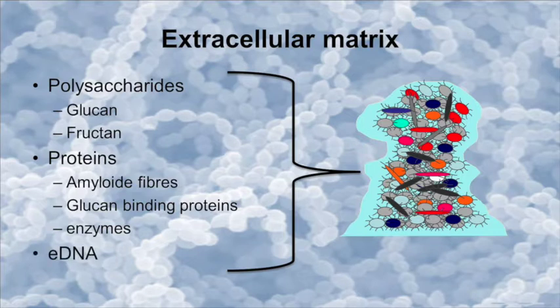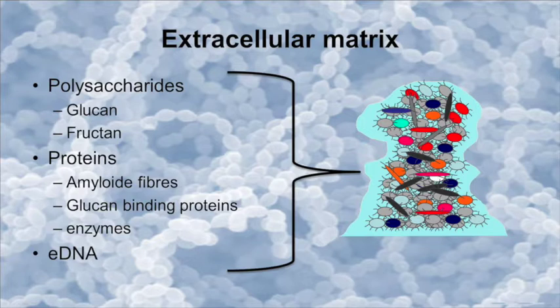DNA, the hereditary material found inside all cells, has also been shown to be an important component of the dental biofilm matrix. The DNA may not just function as a structural component, but may also allow shuffling of genetic material between bacteria. Bacteria in the biofilm may take up extracellular DNA, which may provide the bacteria with new properties. This has gained much interest relating to the global increase and spread of bacteria with resistance to antibiotics.